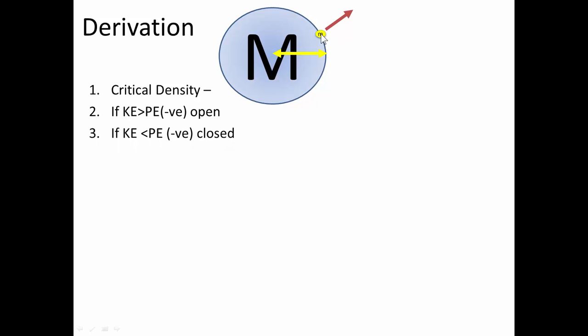If the kinetic energy is less than its potential energy, its negative potential energy, it will come back. That will be a big crunch, that will be a closed universe. On the other hand, if the kinetic energy is equal to the potential energy, the total energy is going to be equal to zero. Remember, the potential energy is a negative value. This is when we have the critical density.